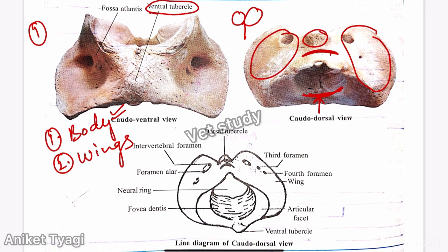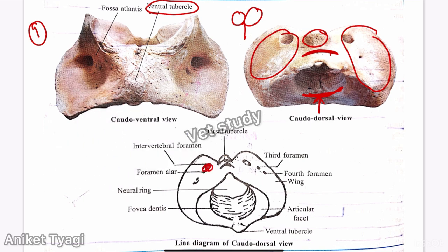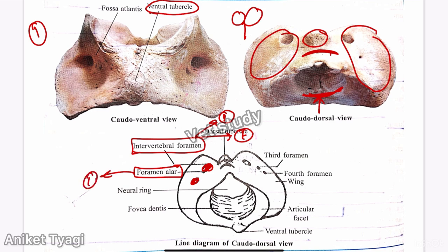There are two foramina present on the wings on the cranial and dorsal surface: the intervertebral foramen and the foramen alar, which gives passage to the vertebral artery. The intervertebral foramen gives passage to the first spinal nerve. At the caudal part of the floor of the neural ring, there is a depression called the fovea dentis, which is important and may be asked in university exams.